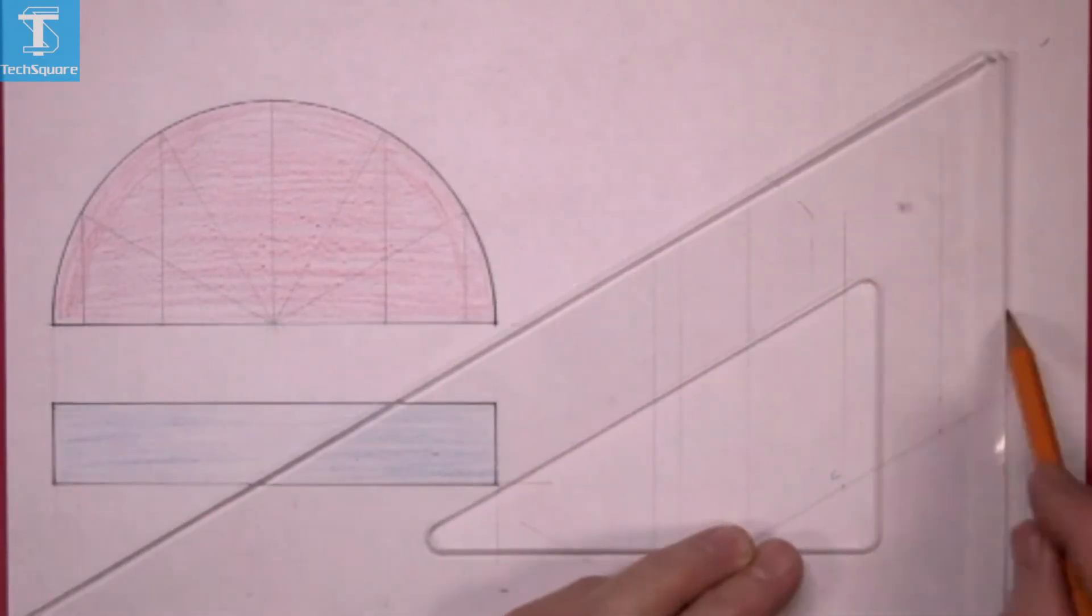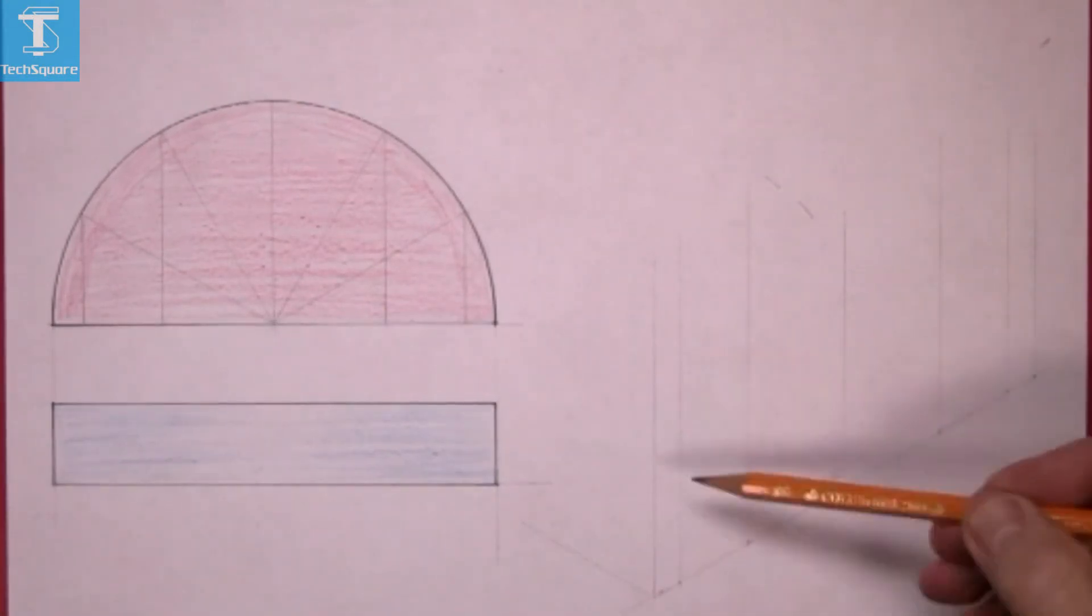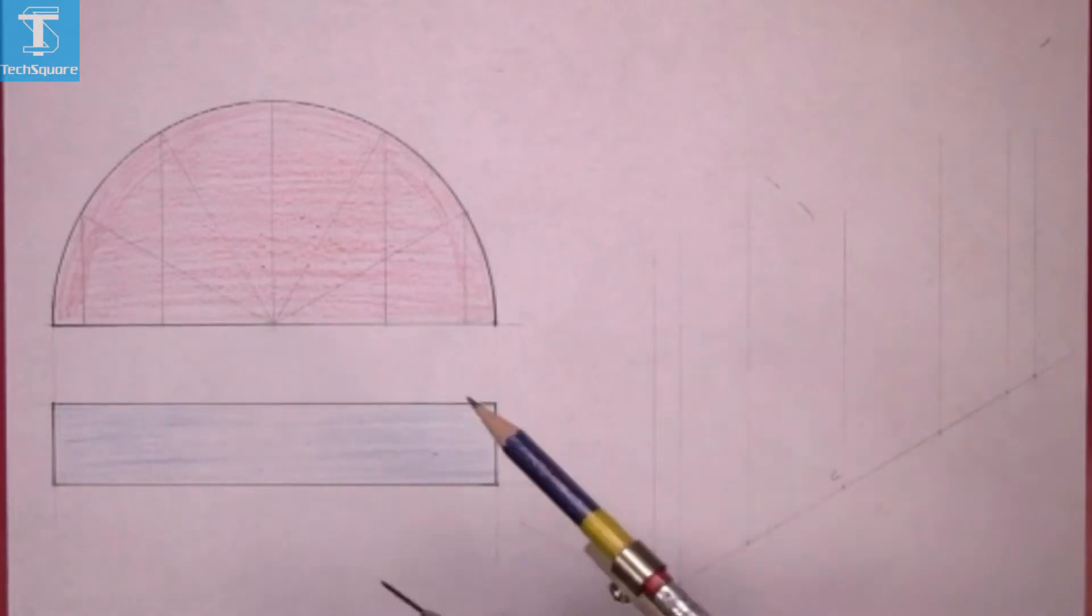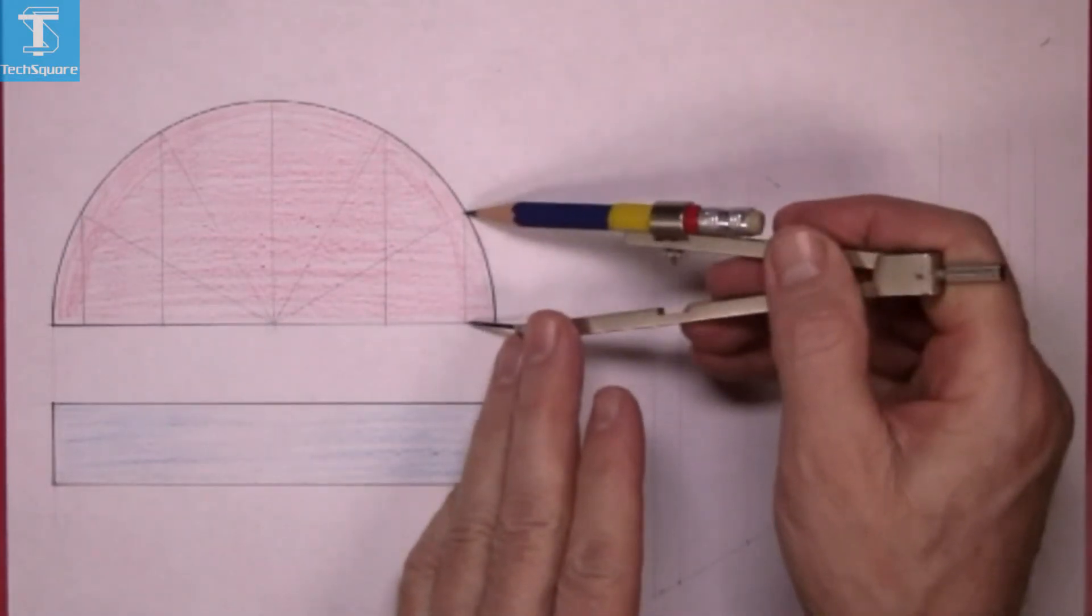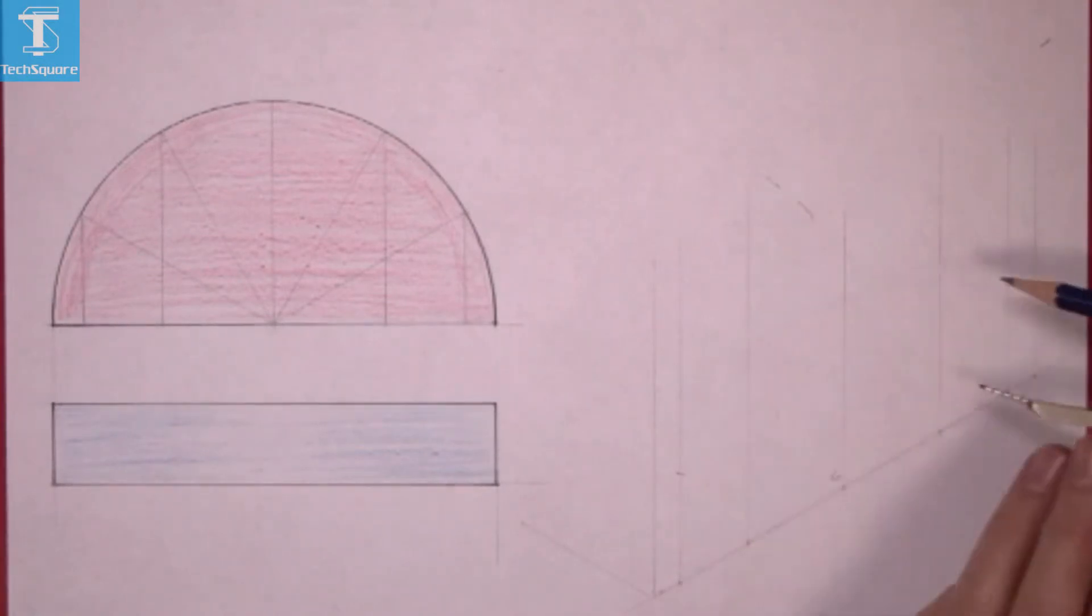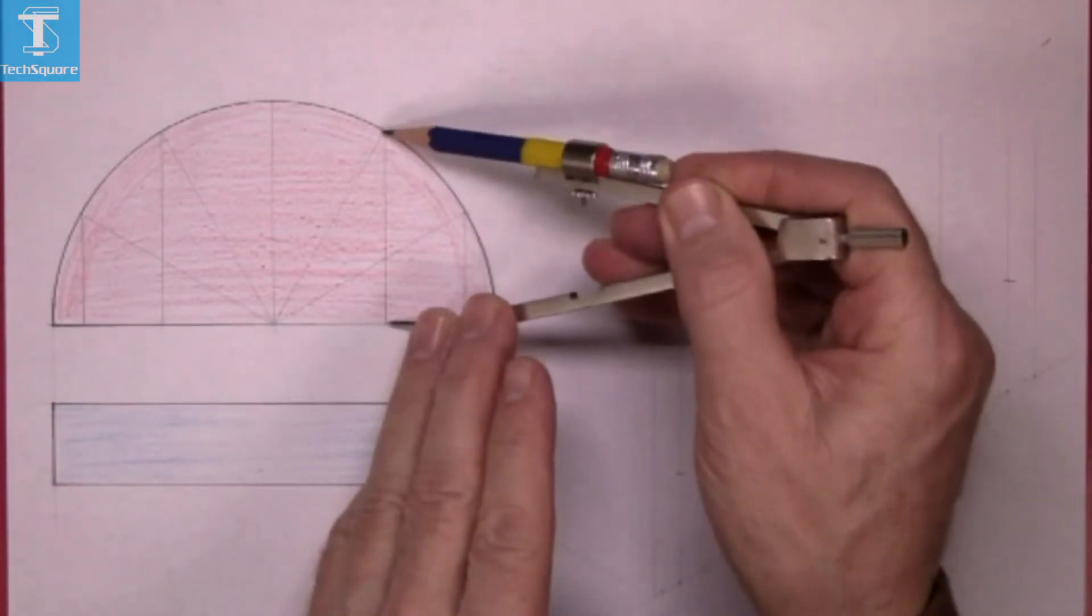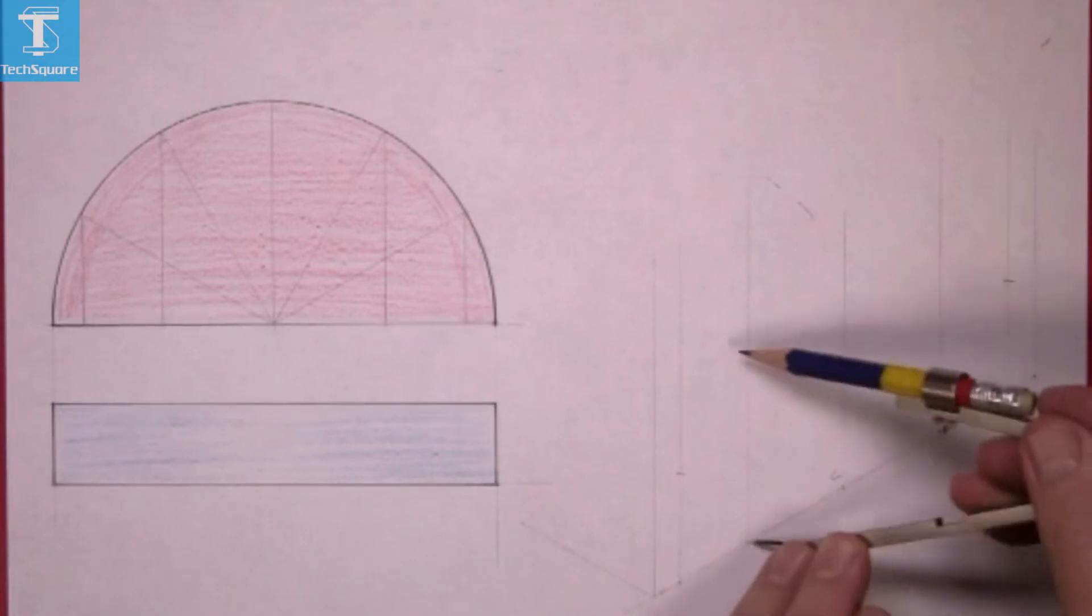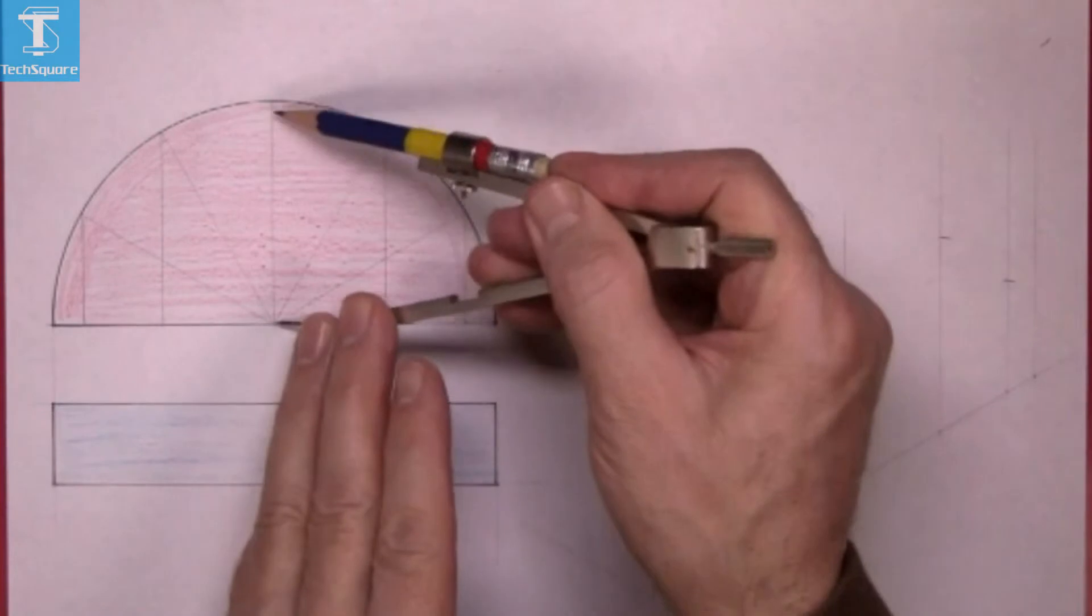Just project the lines up vertically and now take the height of each of those lines. So set the compass from the bottom here to the point on the circle and mark it there and there. Take the next height and you have two positions again to mark it on here, and then the full height.